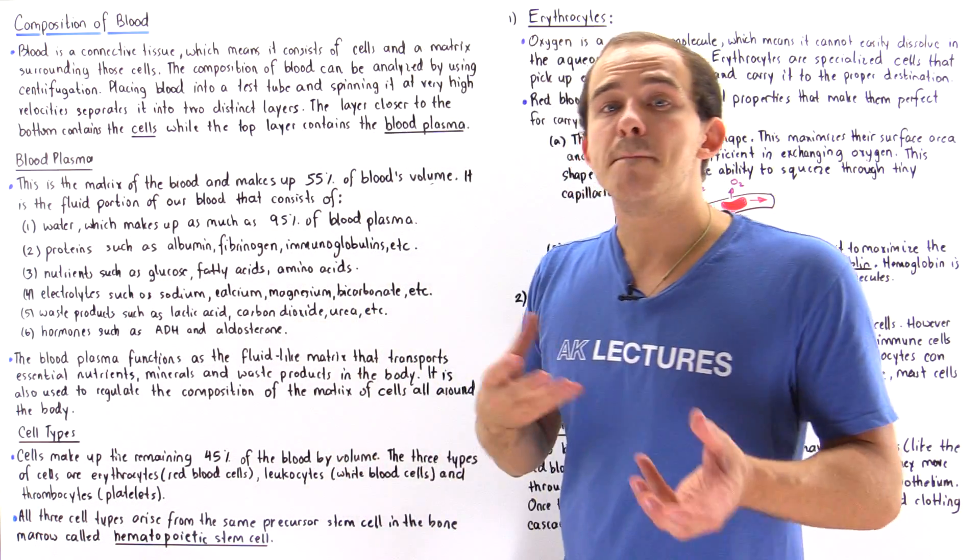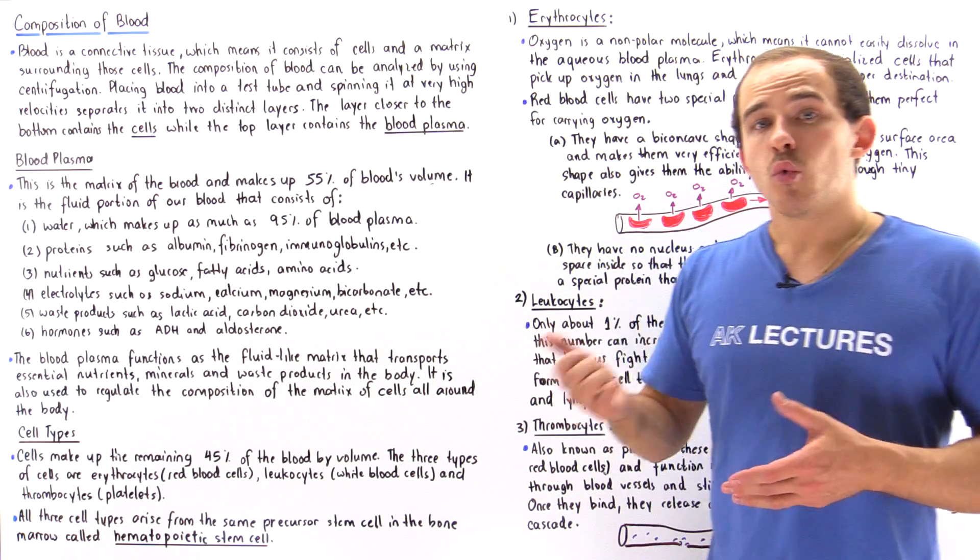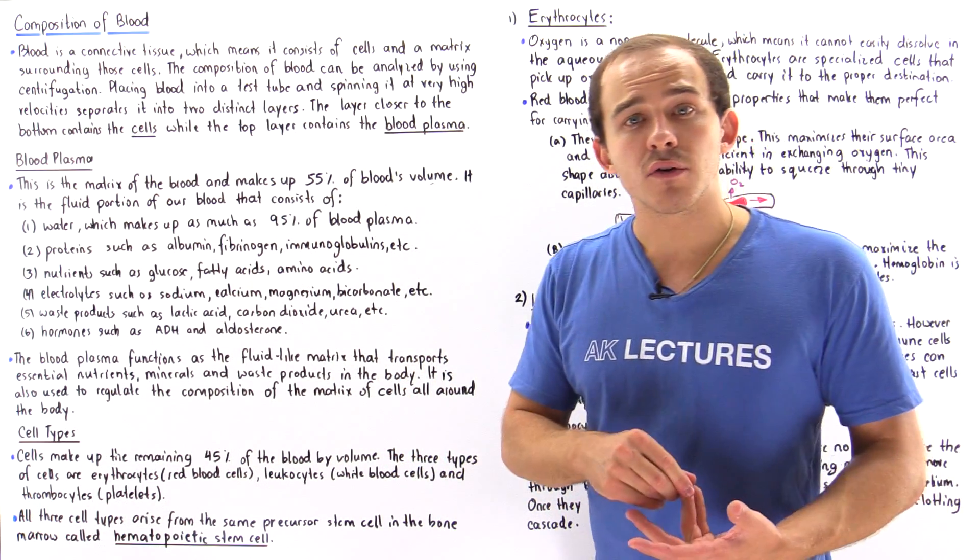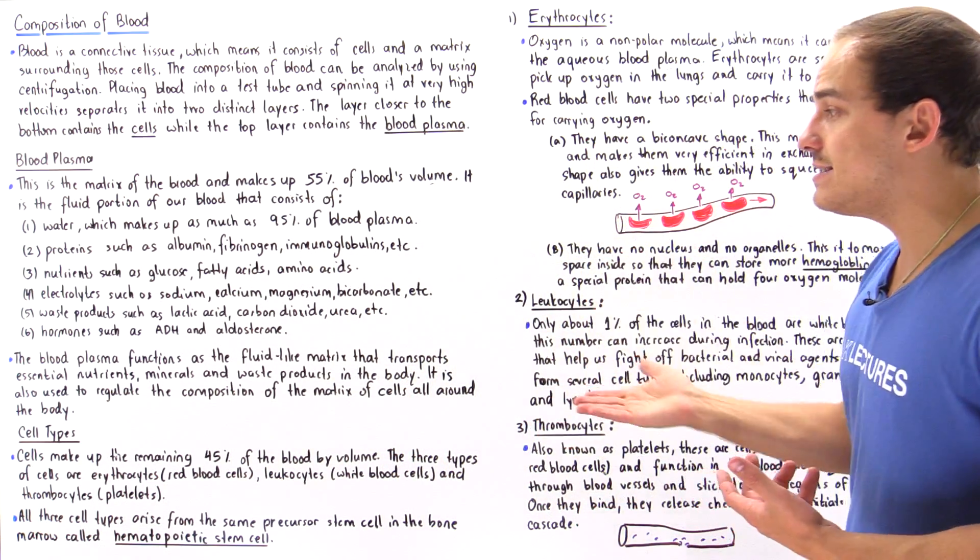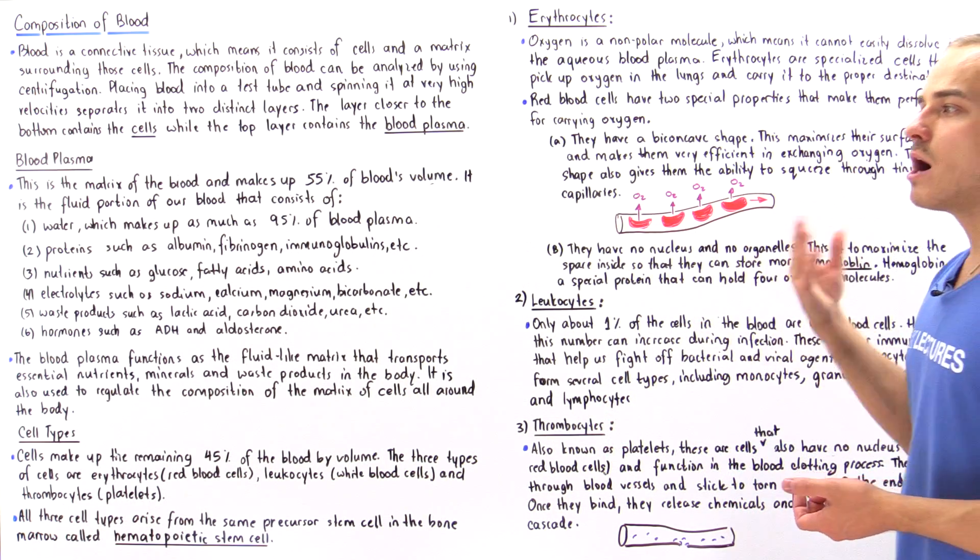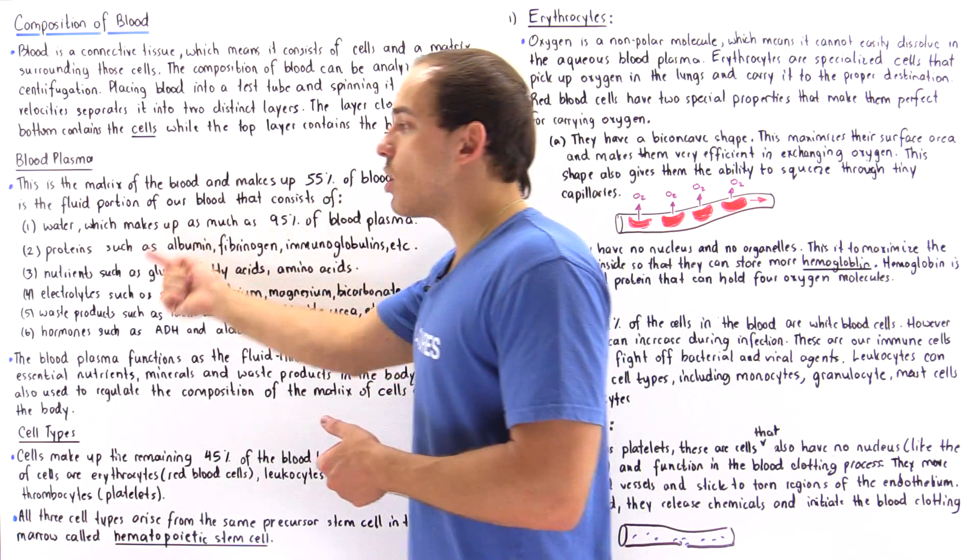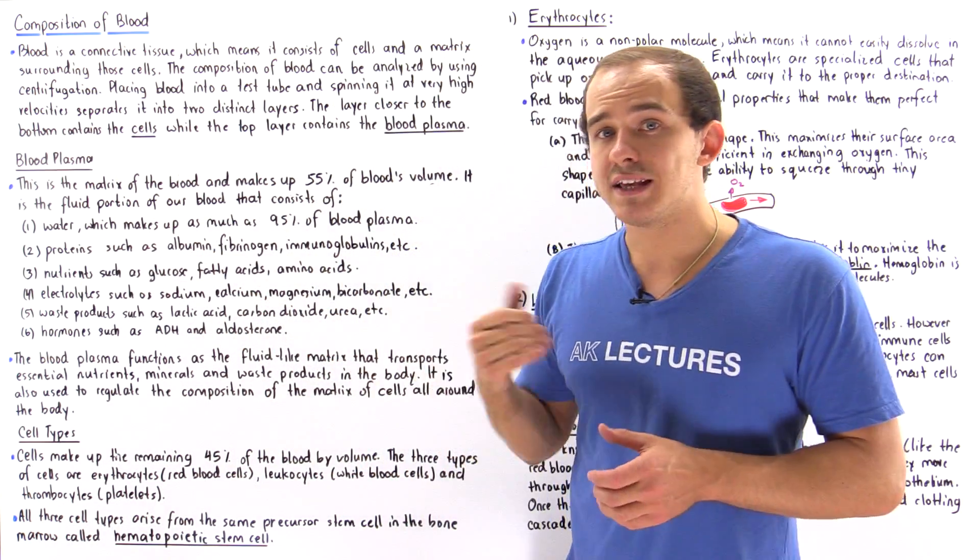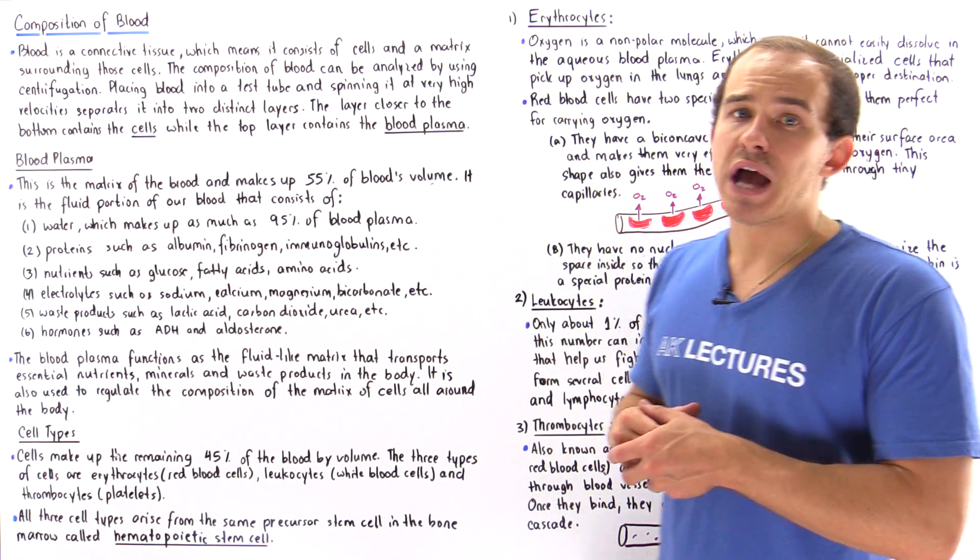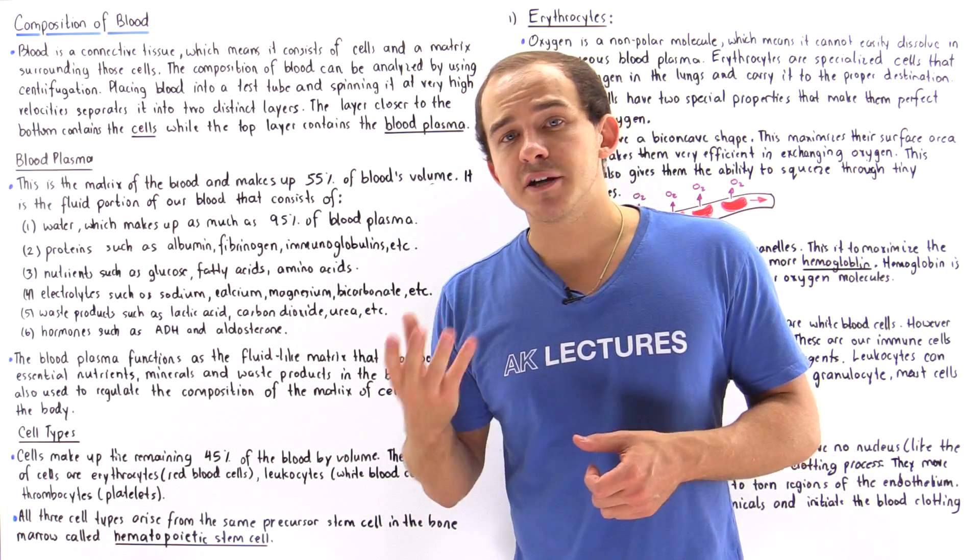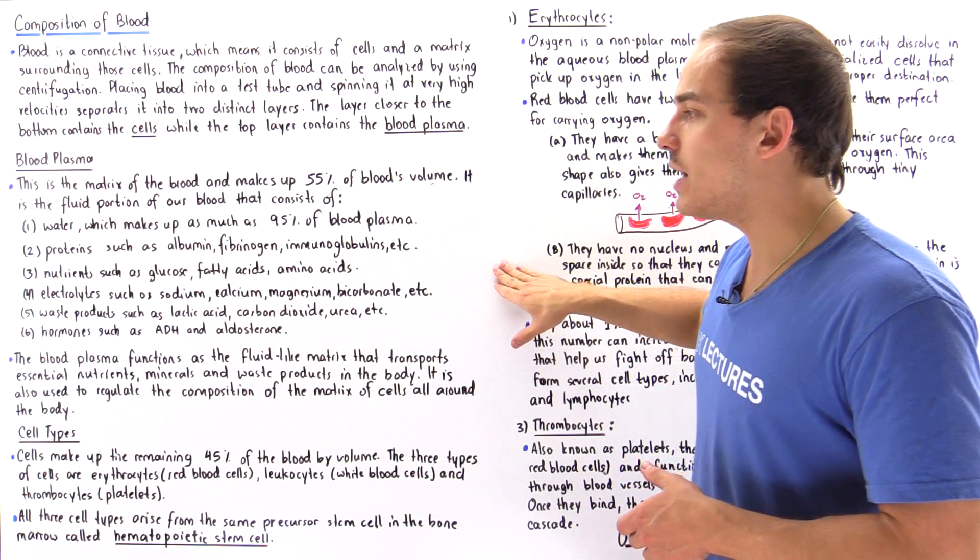Number four, we find a balance of electrolytes. We have sodium, we have chloride, we have calcium, magnesium, bicarbonate and other ions. And these are used not only to regulate the pH but they are also used to actually control the osmotic pressure inside our blood.